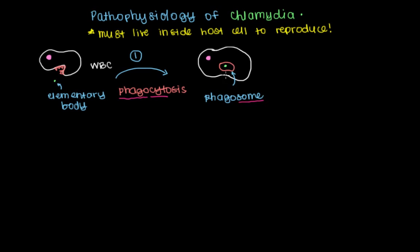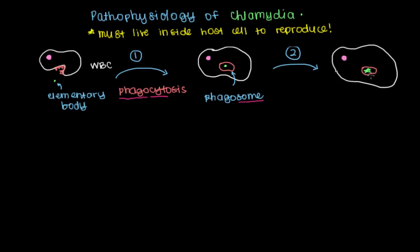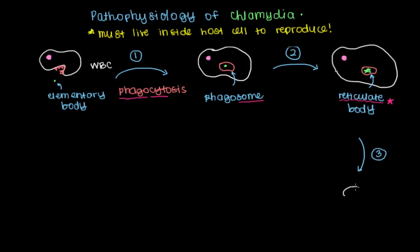Once the chlamydia elementary body is within the white blood cell, it's game time. It uses whatever nutrients it has within this small dot and converts from an elementary body to something that looks like a star. Because it looks like a star, scientists refer to this as a reticulate body — 'reticulate' meaning a star-like shape. Once the chlamydia has turned into a reticulate body, it's going to use the nutrients the white blood cell has.